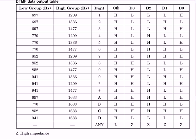This is the output enable — we will learn about that later. These are the outputs D0, D1, D2, D3. When digit 1 is pressed, it gives this kind of tones, and those tones give a binary output. For digit 1, the output is 0, 0, 0, 1.